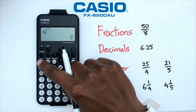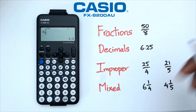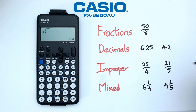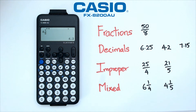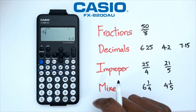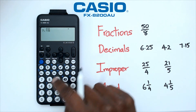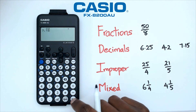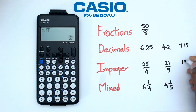To get the decimal, click Shift + EXE and that gives us 4.2. Now what about if we have a decimal — say 7.15 — and we want to convert it to an improper fraction? Just type in 7.15, press EXE, and it automatically gives you the improper fraction, which is 143 over 20.